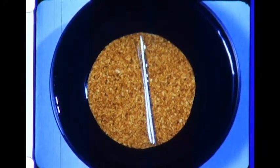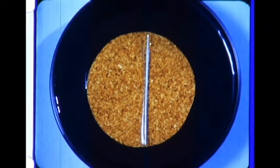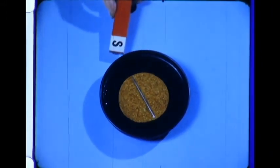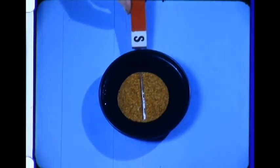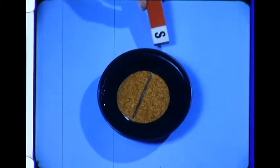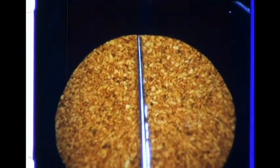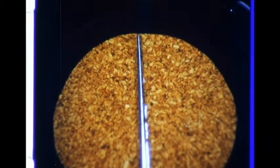If we wait a few moments until it stops turning, we see that the south pole of the bar magnet attracts this end of the needle. So this must be the north pole of the needle. Now we have found the north pole of a magnetized needle. It points towards the north.